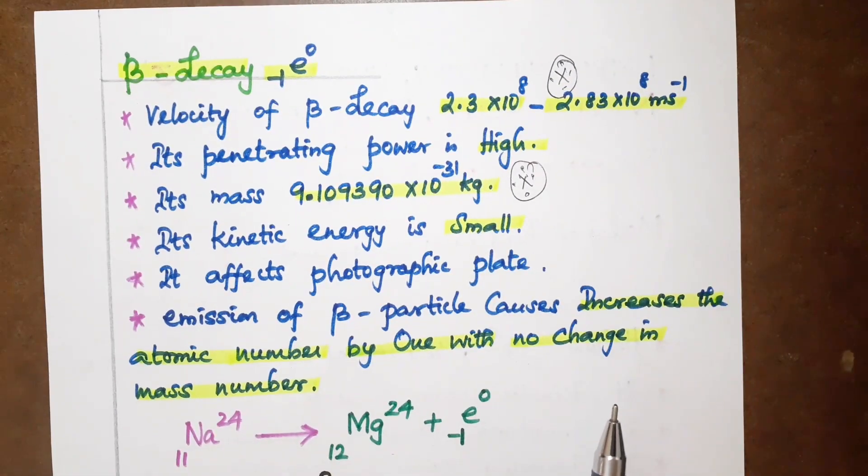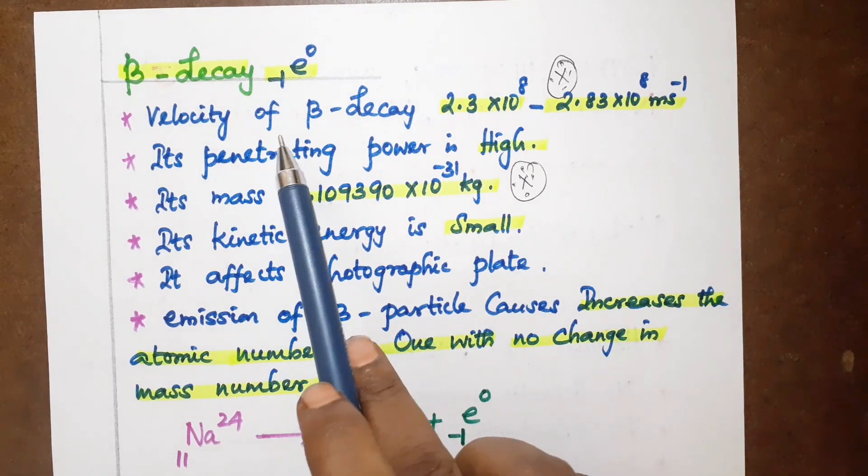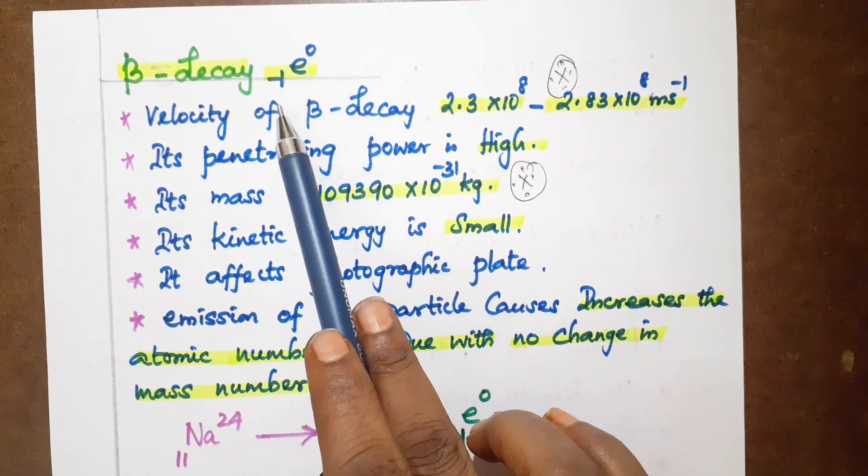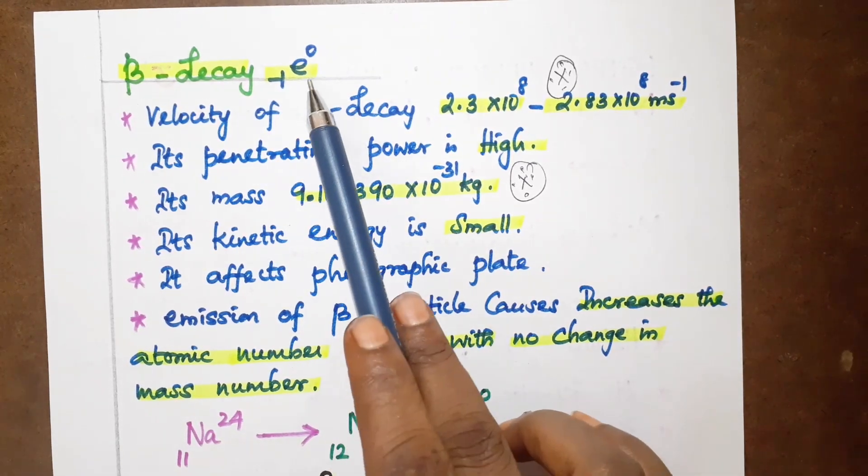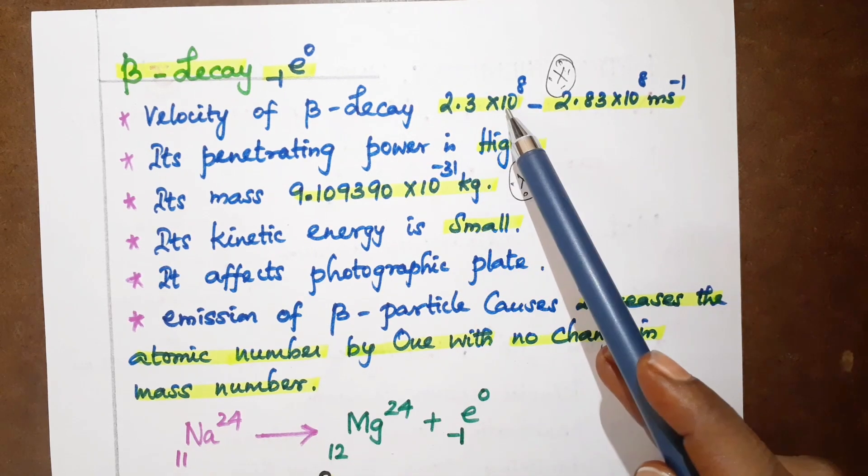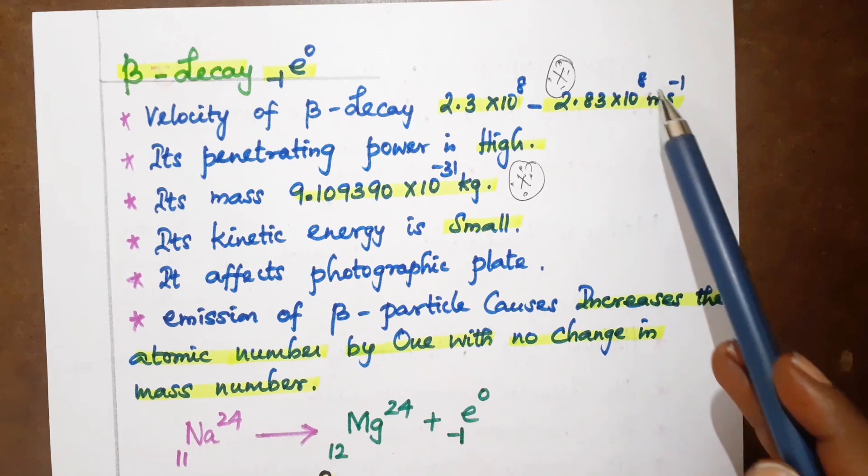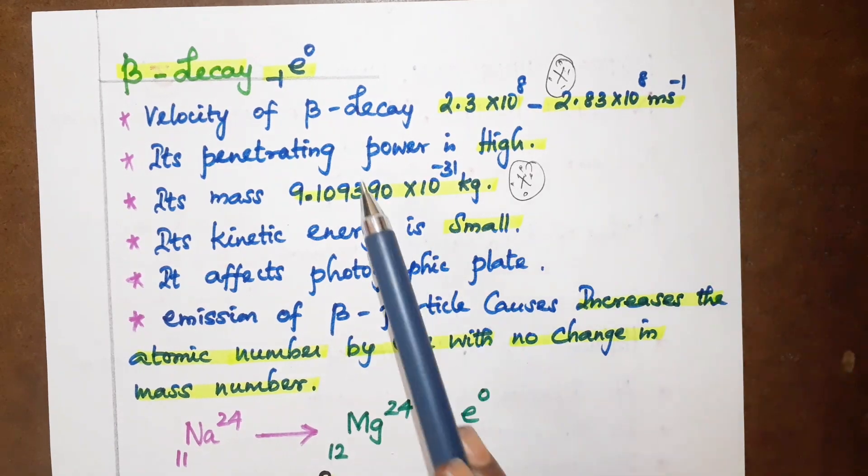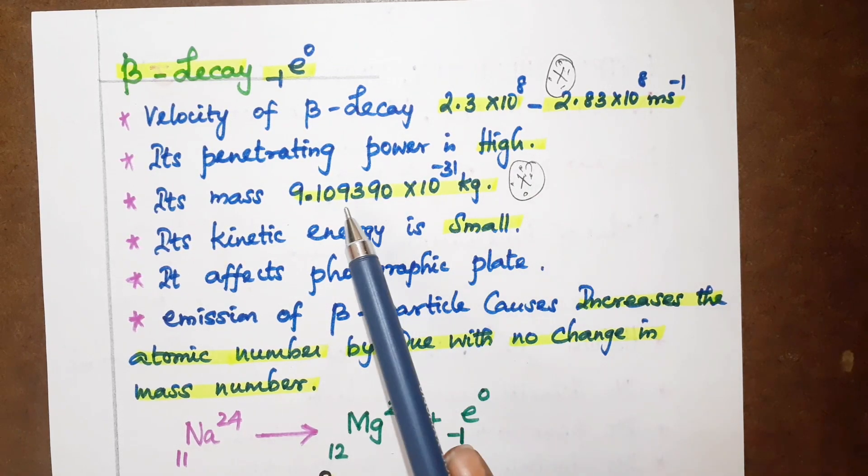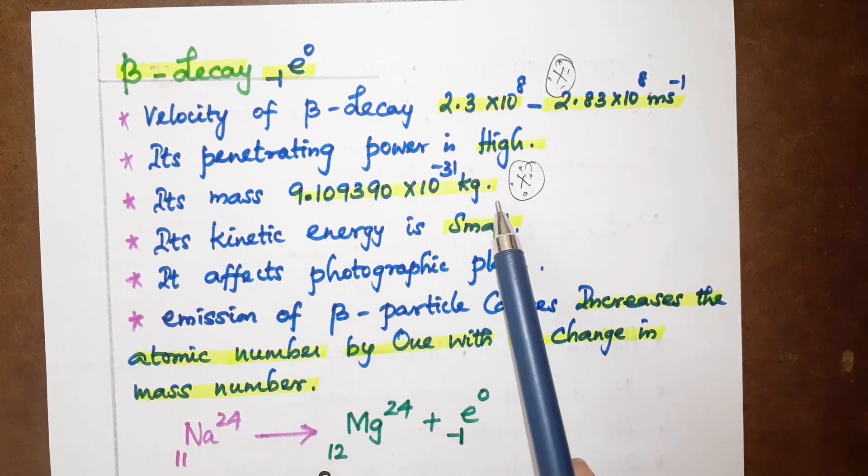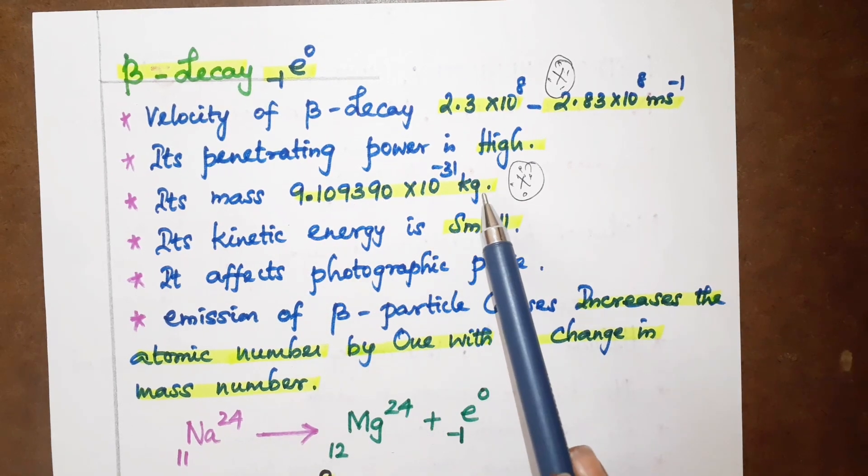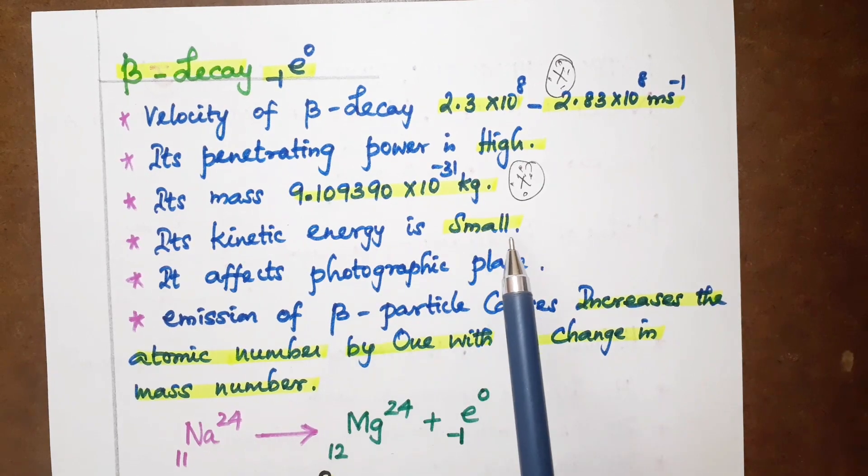Now we'll see beta decay. Beta decay is e-0-minus-1. Beta decay velocity is 2.3x10^8 to 2.83x10^8 meters per second. Penetrating power is high. Ionizing power is minimum. Mass value is important: 9.10939x10^-31 kg. Kinetic energy is small.